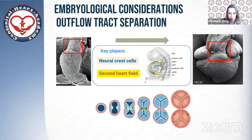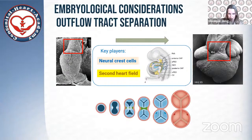During normal development of the outflow tract, the developing heart tube is initially unseparated and therefore needs to evolve from a single tube to a dual vascular structure, which necessitates septation at several levels. And below here, you can see the septation at the level of the valvular level.